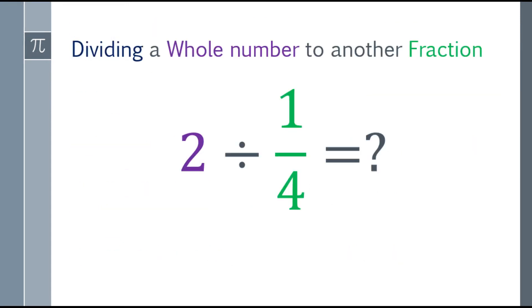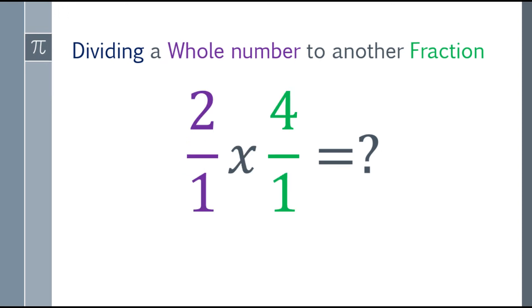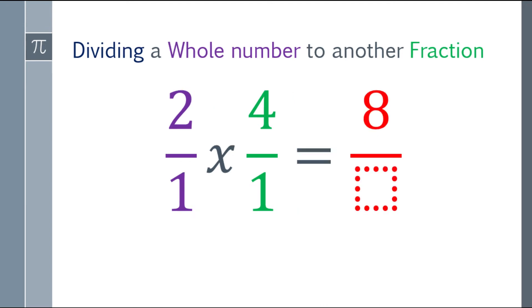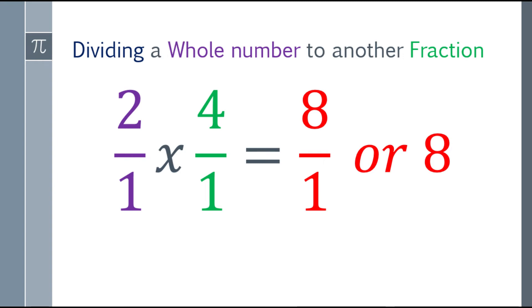So going back to the problem: two divided by one-fourth. Again, take the reciprocal of one-fourth, which will be four over one, and change the sign to multiplication. Now we have to multiply the numerators: two times four is equal to eight. And the denominators: one times one is one. The answer is eight over one, or simply eight.